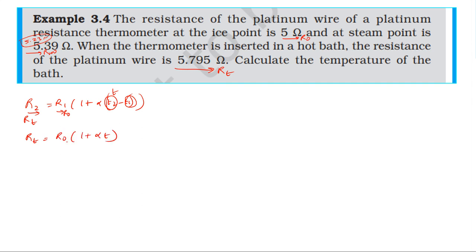Similarly, for 100 degrees centigrade: R_100 - R_0 = R_0 α(100). This is equation two. Now we divide equation two by equation one.